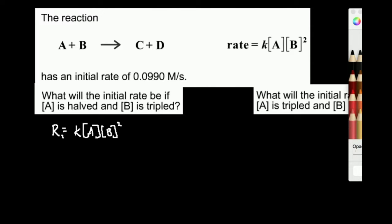The analytical approach is to define a number n, where n is the factor by which the initial rate, rate 1, changes. So I'm going to write this as equal to k times — A is halved, so I throw 1/2 in front of A — times B is tripled, so I throw a 3 in front of B, but I have to remember to square it.